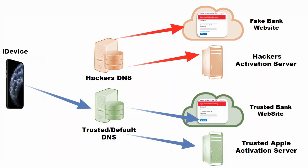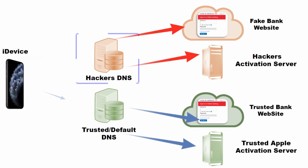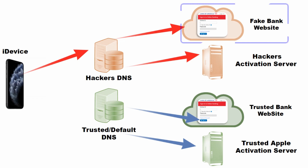Before we start, let's look at some of the bad solutions that are vastly available over the internet. As part of their solution, the solution provider or the possible hacker may ask you to configure their own DNS server, with which they totally hide Apple's trusted activation server and route the activation request from your phone to their own private activation server. They can even route your bank access requests to their own duplicate fake bank webpage and steal your user ID and password.